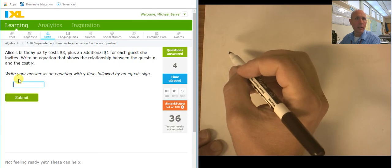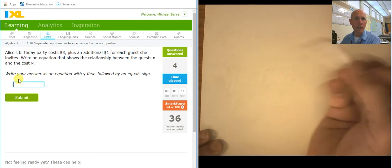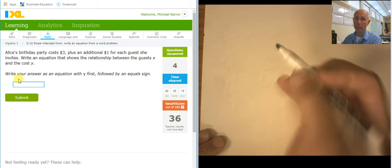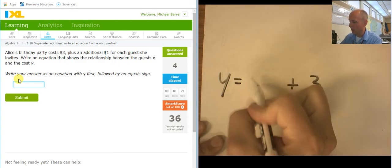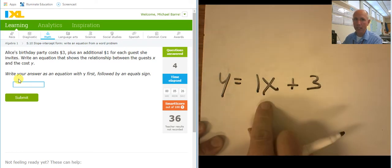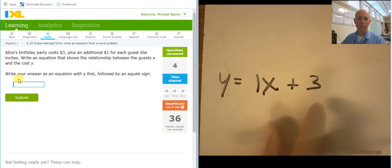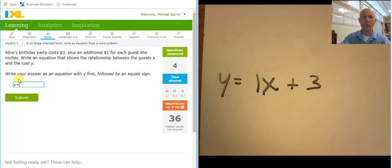Birthday party. It's three bucks for the birthday, and then a dollar for each additional guest. So, three dollars initial. So, y equals three dollars initial plus one for each guest. Zero guests, three bucks. One guest, four dollars. Two guests, five dollars. Once again, I'm going to drop off that one. So, just go with x plus three.